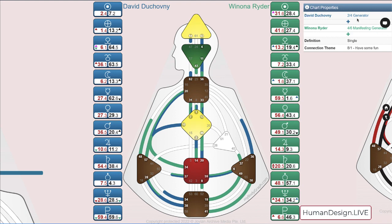Winona is a 4-6 manifesting generator. David is a 2-4 generator. So it's not as bad as if one of them was a non-energy type, particularly a projector. Projector in compromise would be challenging. There's a little compromise there, lots there, actually.